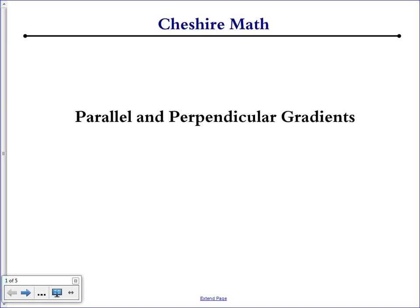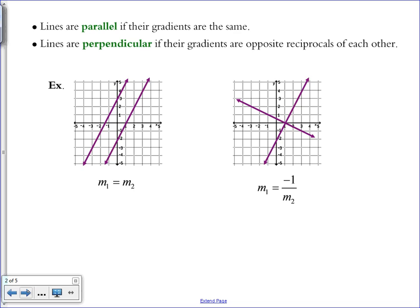This video is about parallel and perpendicular gradients. Lines are considered parallel if their gradients are the same and they never intersect. Lines are perpendicular if their gradients are opposite reciprocals of each other, and therefore they cross and make a 90-degree angle with each other.